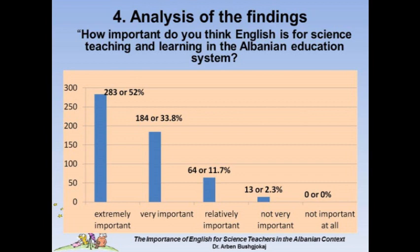Section 4 is the analysis of the findings. When subjects were asked how important English is for science teaching and learning in the Albanian education system, their ranking was as follows: 283 subjects, or 52%, consider it extremely important; 184, or 33.8%, see it as very important; 64, or 11.7%, as relatively important; 13, or 2.3%, as not very important; and 0 subjects, or 0%, as not important at all. From the results, it is evident that English is esteemed highly by a majority of the subjects, with a very large majority viewing it as either extremely important or very important.